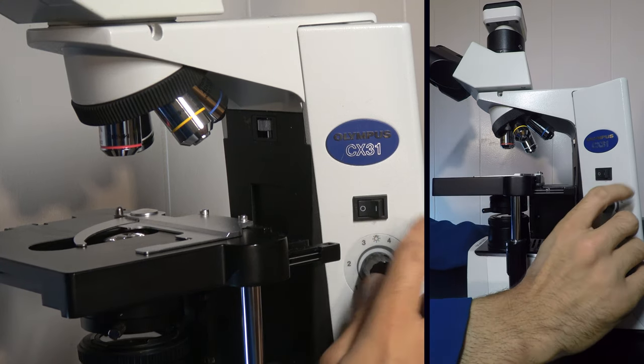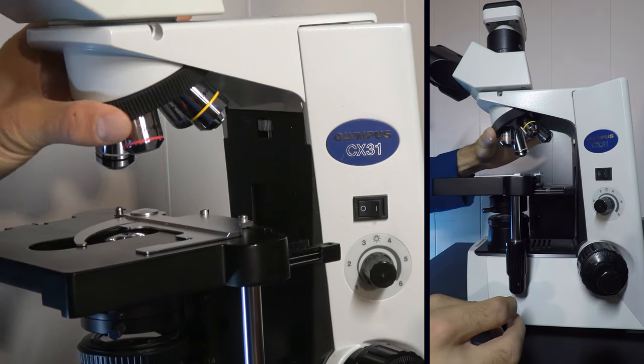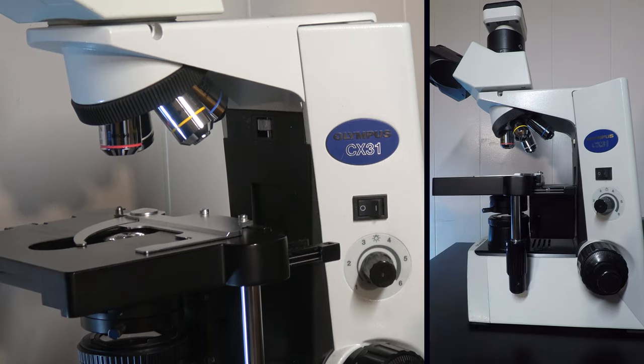You should arrive at your scope with the light off, the light intensity down, the stage completely lowered and the lowest objective in place. This is the 4X.